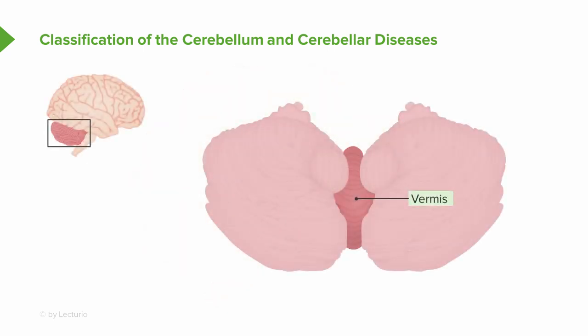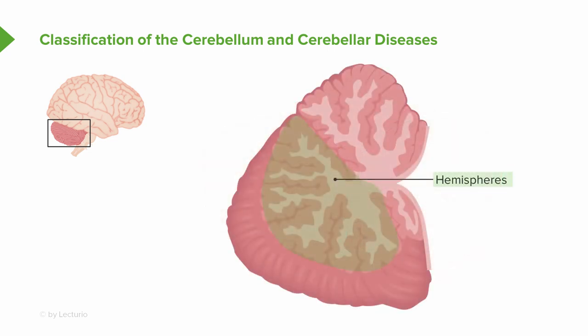What are the lobes of the cerebellum? The first is the vermis — the midline lobe that controls trunk coordination. The cerebellar hemispheres (anterior, posterior, left, and right) control appendicular coordination of our arms and legs. The third lobe, the flocculonodular lobe — the flocculus and nodulus — is the smallest but perhaps most important, controlling coordination of eye movements. These are the three lobes involved in cerebellar function.